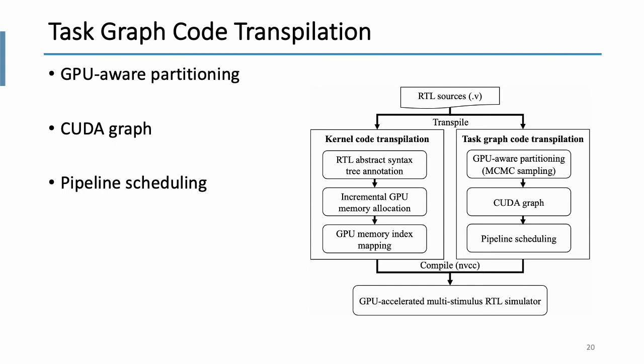So next part, test graph code transpilation. In this part, we have three stages. The first one is GPU-aware partitioning. The second one is CUDA graph. And the final one is pipeline scheduling.